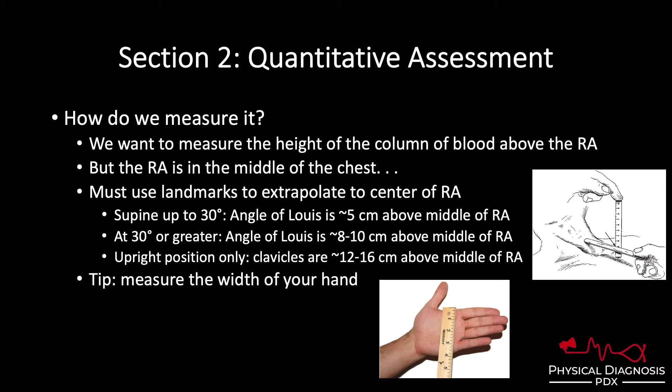Textbooks love to use an image with a ruler at the angle of Louis and another straight edge — multiple hands involved, very cumbersome. I've personally never done this. There's a strategy where you measure the width of your hand, and that's what we do. I know my hand is eight centimeters wide, and now we can use our hand in the position of that ruler. The hypothenar aspect — the pinky side — is placed down on the patient's angle of Louis, with the thumb pointed up towards the ceiling and the palm facing the patient's neck.